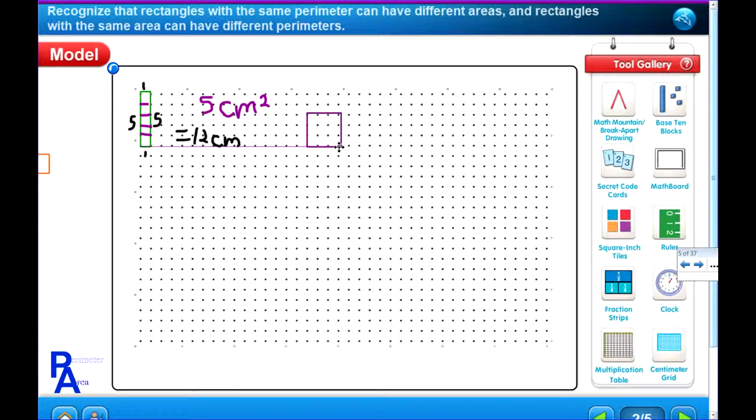This box is also 12 centimeters going all the way around. Go ahead and count. 1, 2, 3 on top. 3 centimeters on top. 1, 2, 3 centimeters on the side. So that square is also 12 centimeters to go all the way around.